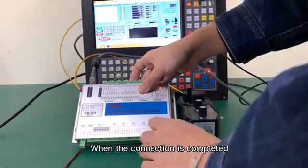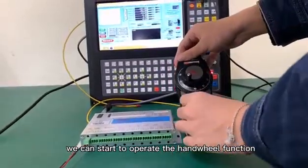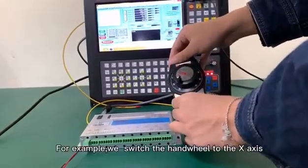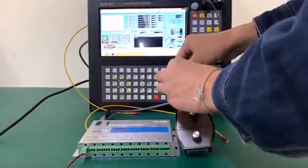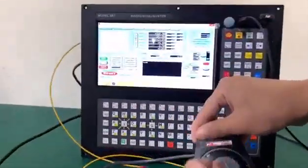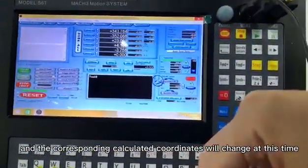When the connection is completed, we can start to operate the handwheel function. For example, we switch the handwheel to the X-axis, then turn the handwheel, and the corresponding calculated coordinates will change.